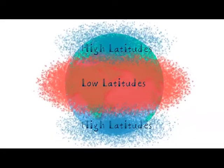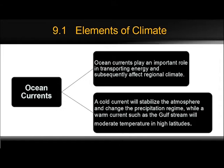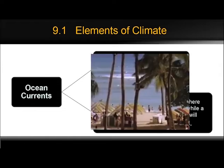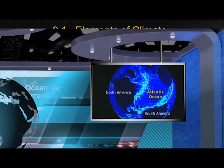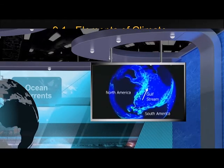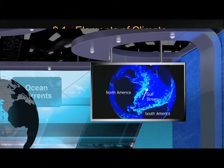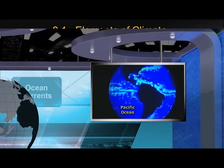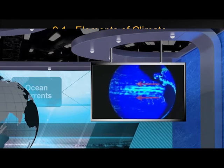Another element is ocean currents. Ocean currents greatly affect the temperature and precipitation of climate. Climates bordering cold currents tend to be drier, as the cold ocean water helps stabilize the air and inhibit cloud formation and precipitation. Air traveling over cold ocean currents loses energy to the water, moderating the temperature of nearby coastal locations. Air masses traveling over warm ocean currents promote instability and precipitation. The warm ocean water also keeps air temperatures somewhat warmer than locations just inland from the coast during the winter.